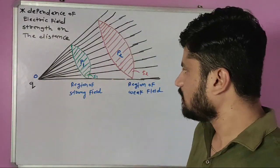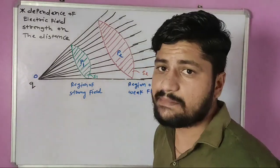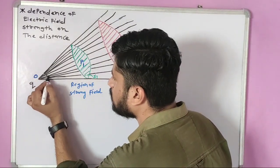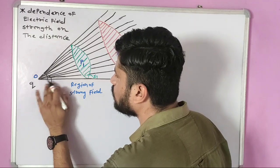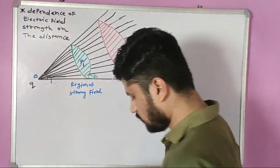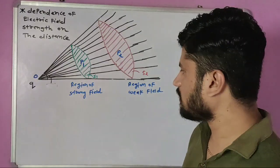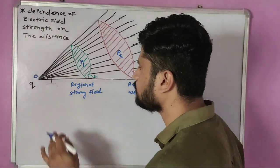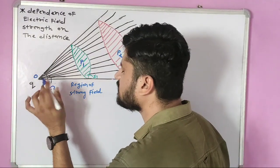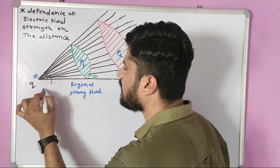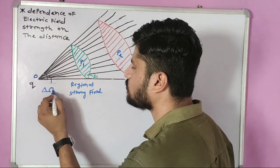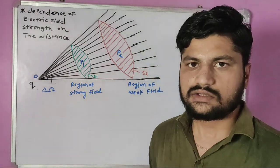Friends, here in three dimensions this angle will be a solid angle. I have a blue marker — solid angle is denoted as delta omega. This is delta omega — this is the symbol.